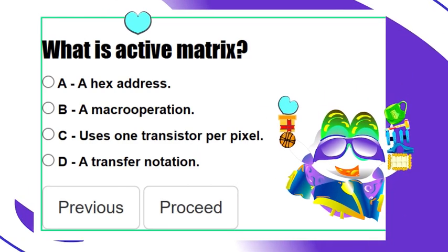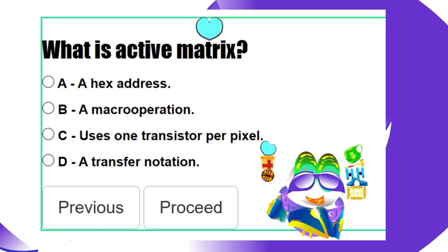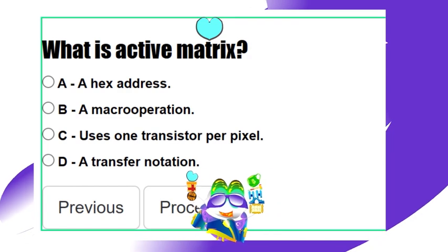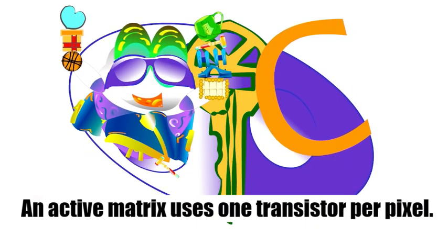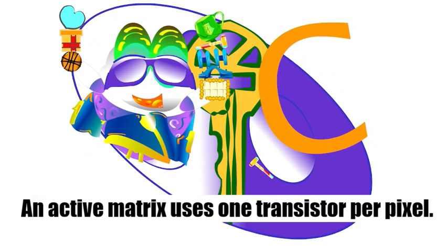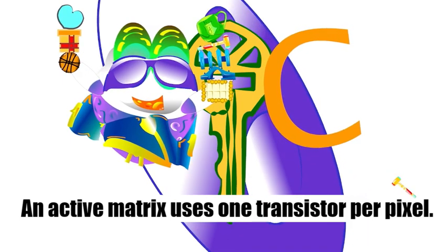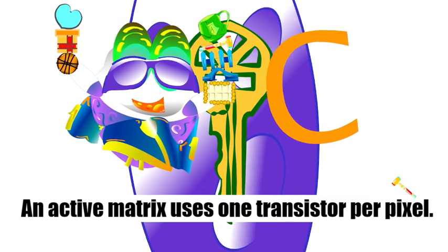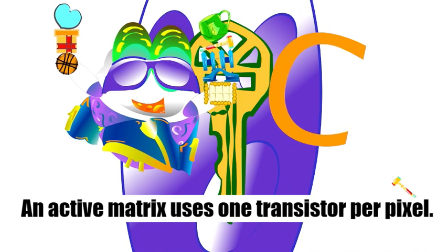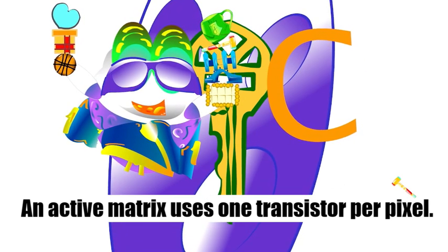What is active matrix? What is costly? What is expensive here? An active matrix uses one transistor per pixel. Picking up where we left off, we were discussing LCD, liquid crystal displays, and the components of pixels.